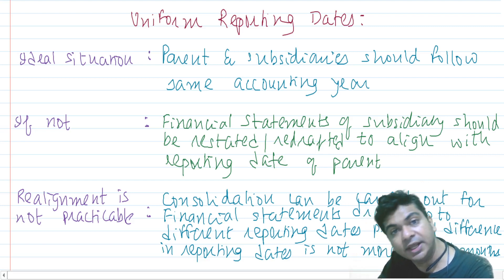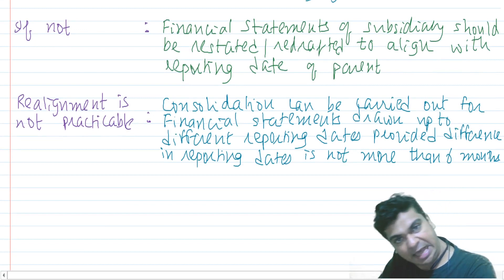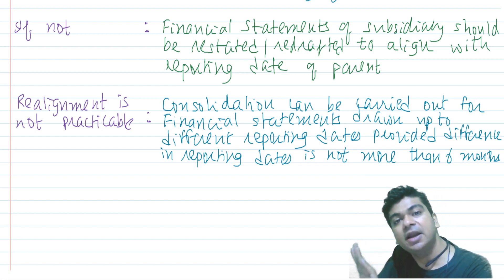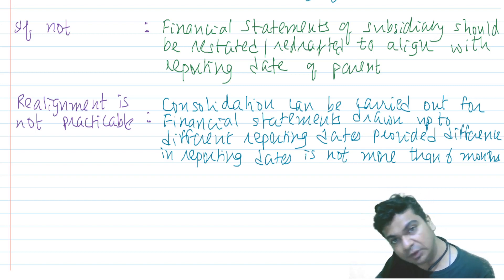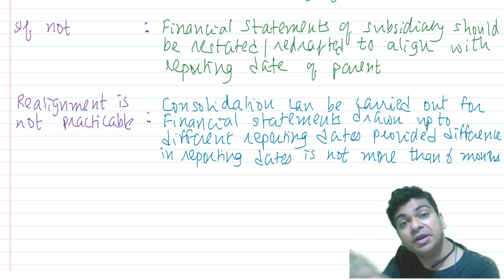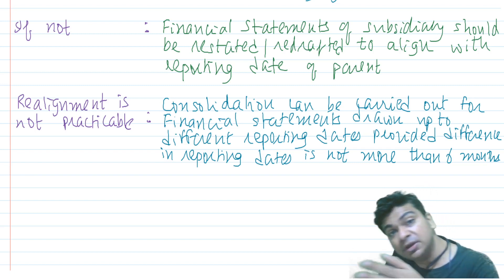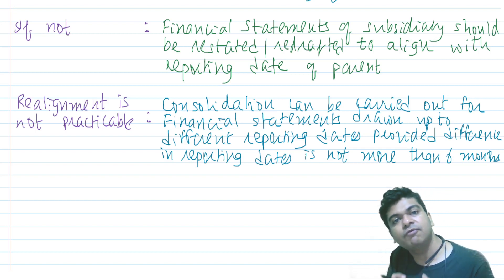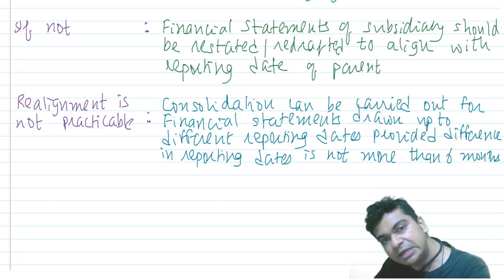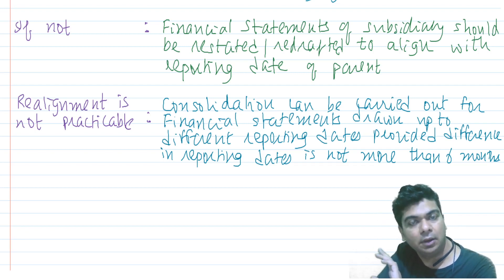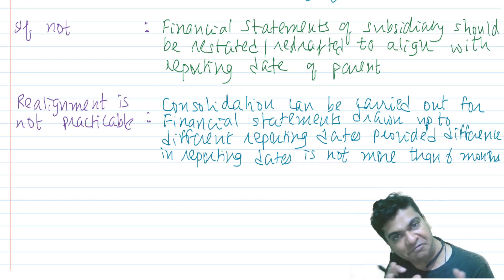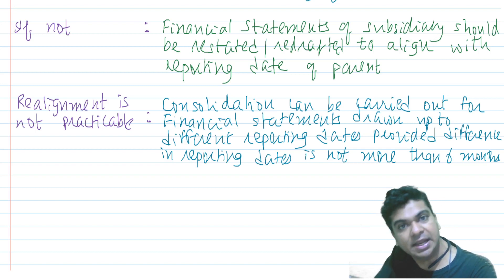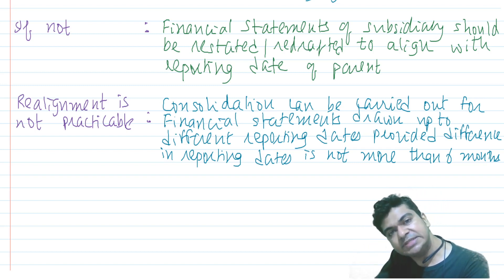What if it is not so? For example, if your subsidiary is outside India — a foreign subsidiary — the laws of that country may require you to follow the calendar year, while in India you must follow the financial year. So the parent prepares financial statements on 31st March, but the subsidiary is forced to prepare on 31st December. In such a case, for the purpose of consolidation, redraft or restate the financial statements of the subsidiary and align them with the reporting date of the parent — outside the books, carrying out adjustments as needed.